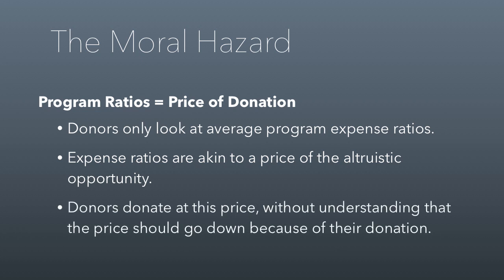What donors don't realize, though, is that when they donate at a given price or a given program ratio, the price should go down because of their donation, meaning an increasing amount of revenue should improve the program ratio because the non-profit doesn't need to hire another accountant. And this is a moral hazard — basically a situation in which a person is incentivized to act contrary to the way we want them to act. We create a financial incentive for a certain kind of behavior, but it's not the desirable behavior.